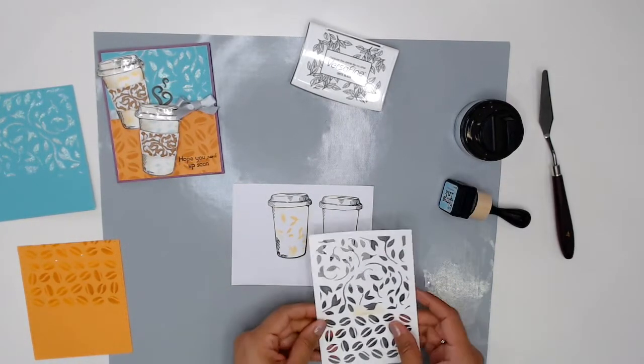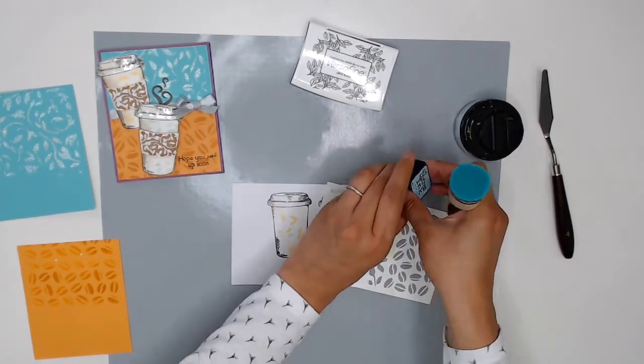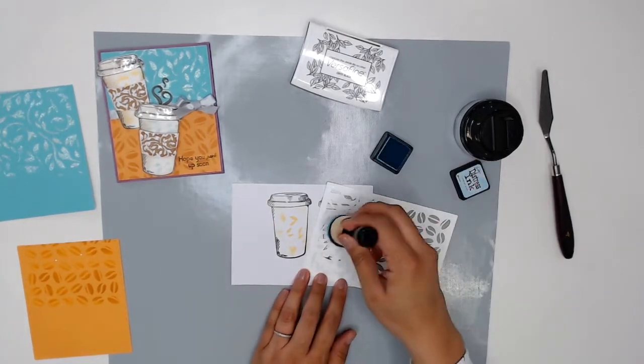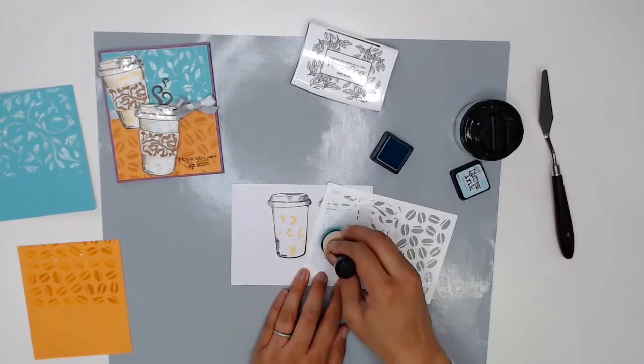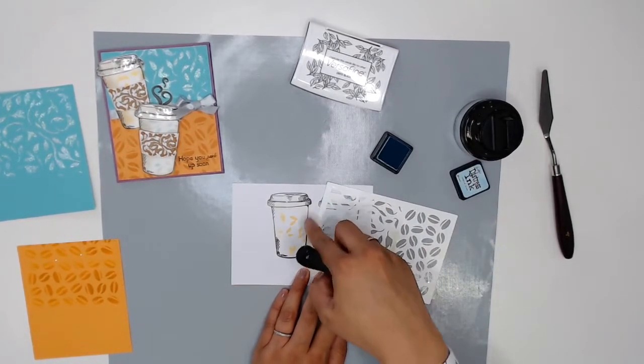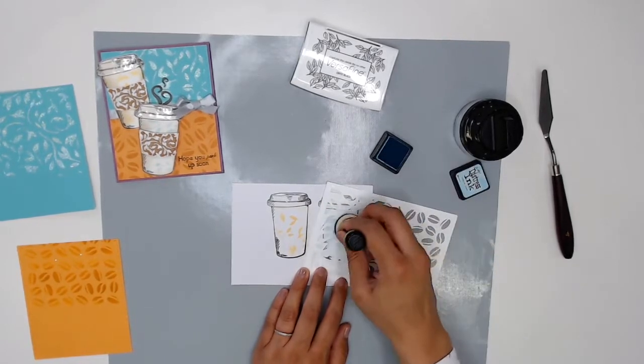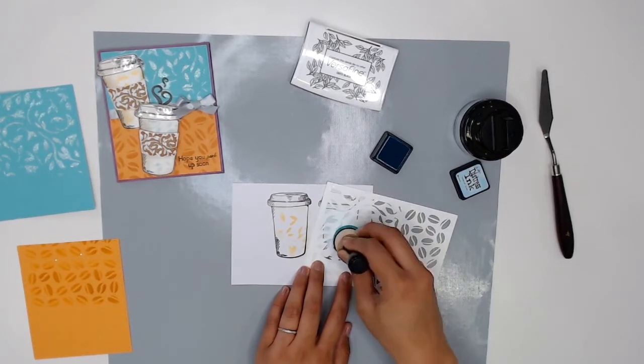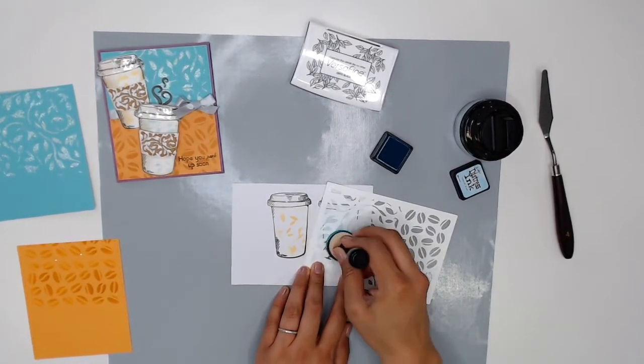Now I'm going to do the same thing to this coffee cup but instead of orange I'm going to be using broken china and again just putting some color right through the stencil and if I go over the edges of the coffee cup like I did here that's fine because I'm going to be cutting these out in just a little bit so I'm going to do a little bit of fussy cutting around my stamped coffee cup and then we can move on to the next step.